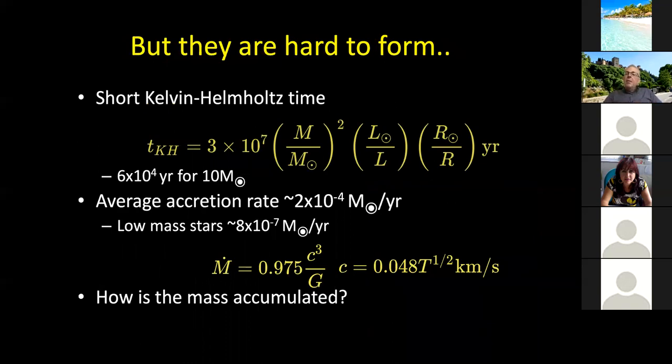But these high mass stars are difficult to form. So this little equation here is the Kelvin Helmholtz time. It's basically the time it takes a forming star to radiate away its gravitational energy so it can contract onto the main sequence.